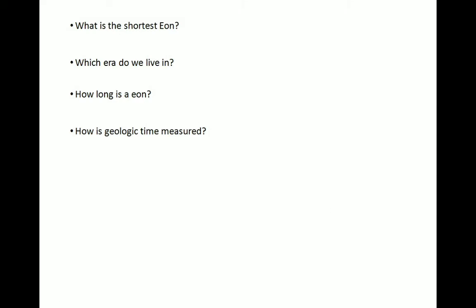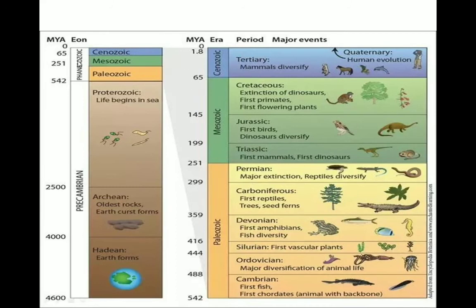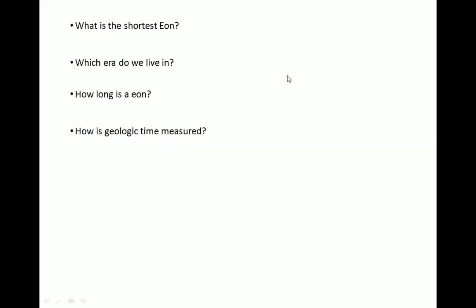Here are some important questions that are often asked: What is the shortest eon? Which era do we live in? How long is an eon? How is geologic time measured? The first question: the Quaternary spans from 2.58 million years ago to the present day and is the shortest geological period, in the Phanerozoic eon.